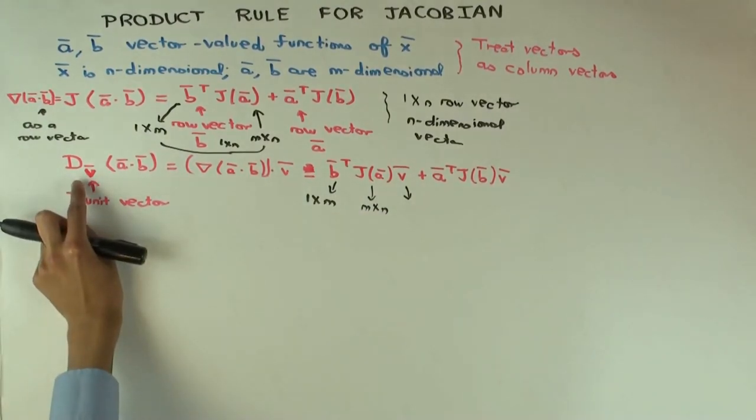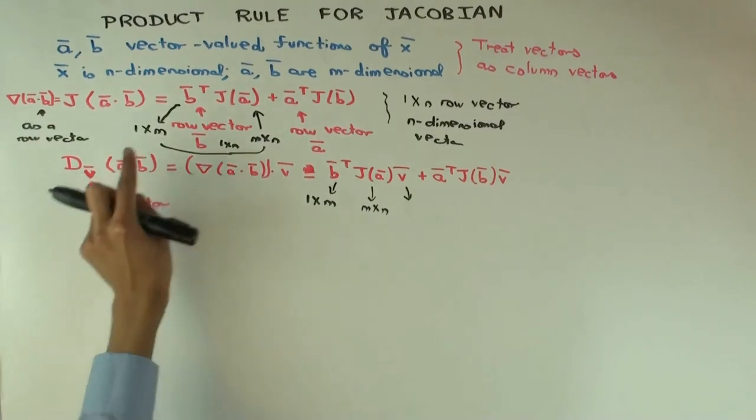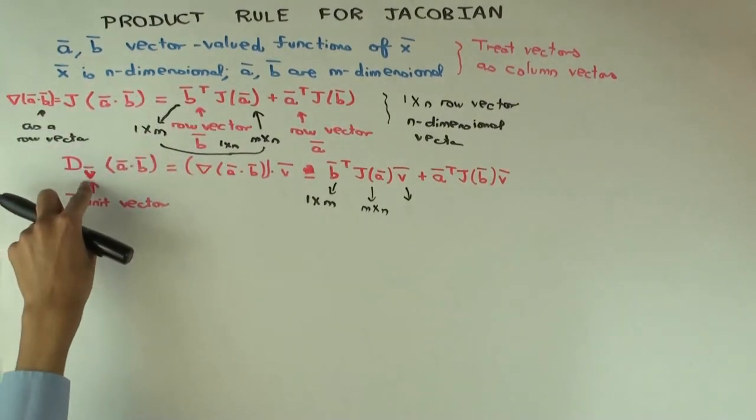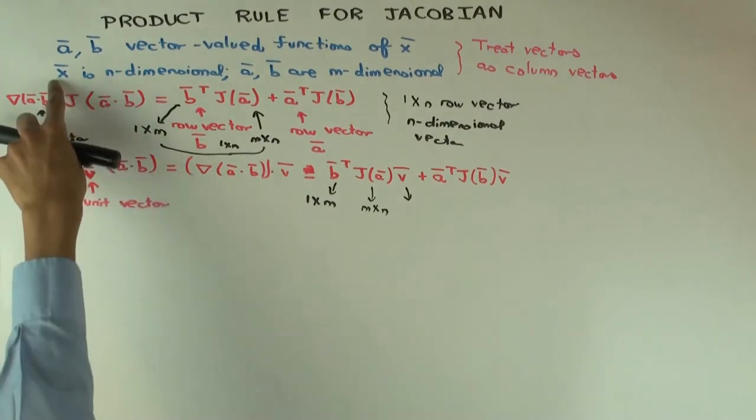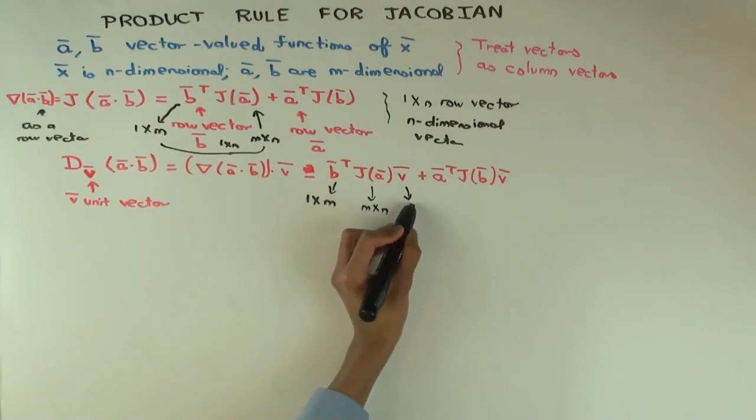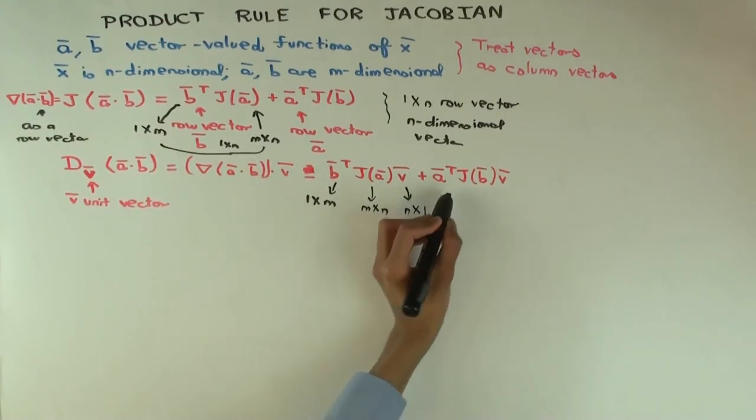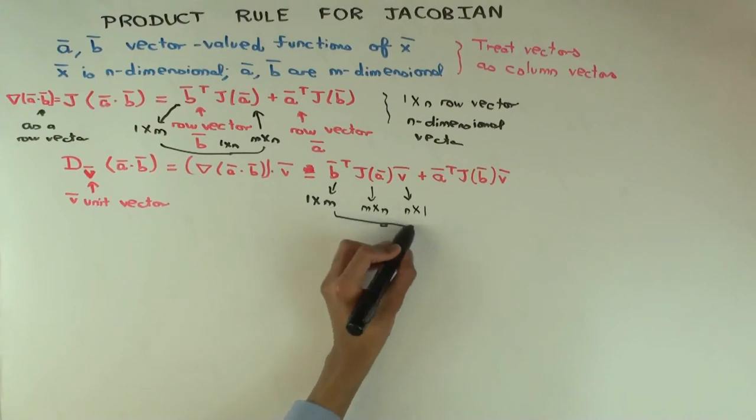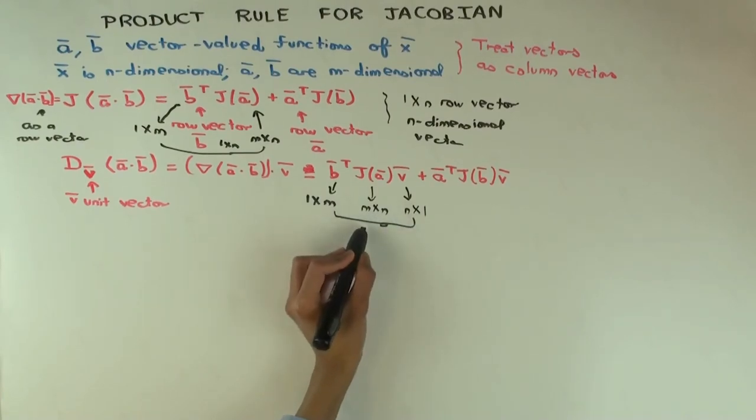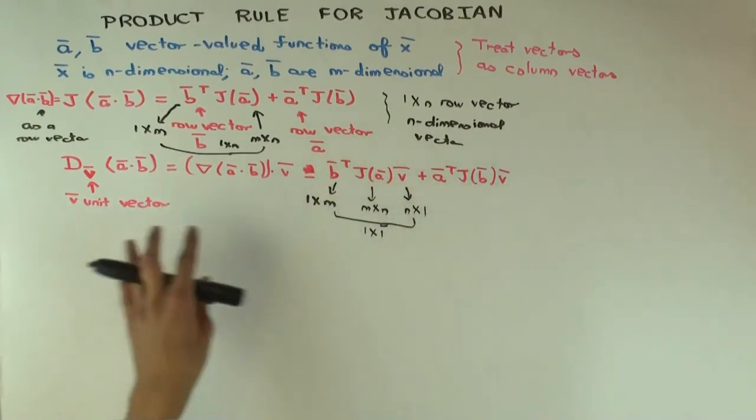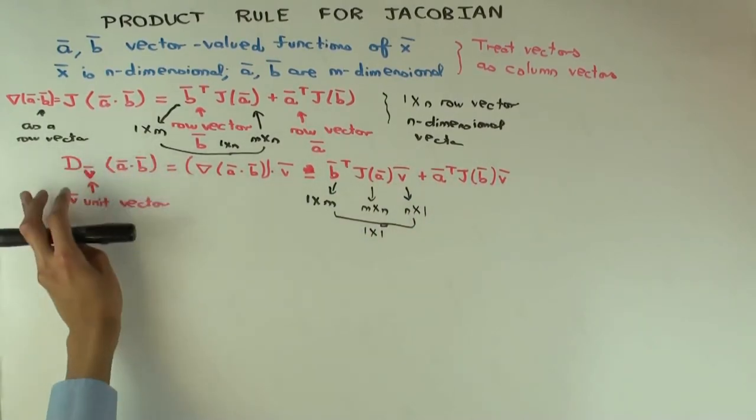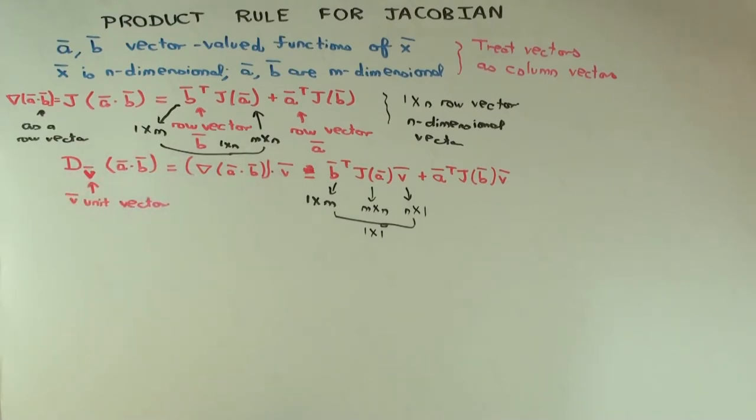And v is a column vector. Where is it living? It should be living in n dimensions because you're taking the derivative in the direction of v, and the directions here are coming from the inputs to the function. This is n by 1. So what happens when you multiply these? What kind of matrix do you get? 1 cross 1. And similarly for this, so you're just adding two numbers. Now is the output supposed to be a number? It's a directional derivative of a scalar-valued function of a vector variable, so that should be a number.